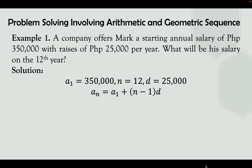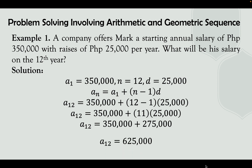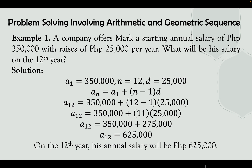So we have a sub 12 equals 350,000 plus (12 minus 1) times 25,000. Simplifying: 12 minus 1 equals 11, and 11 times 25,000 equals 275,000. Adding 275,000 plus 350,000, our a sub 12 is 625,000 pesos. On the 12th year, his annual salary will be 625,000 pesos.